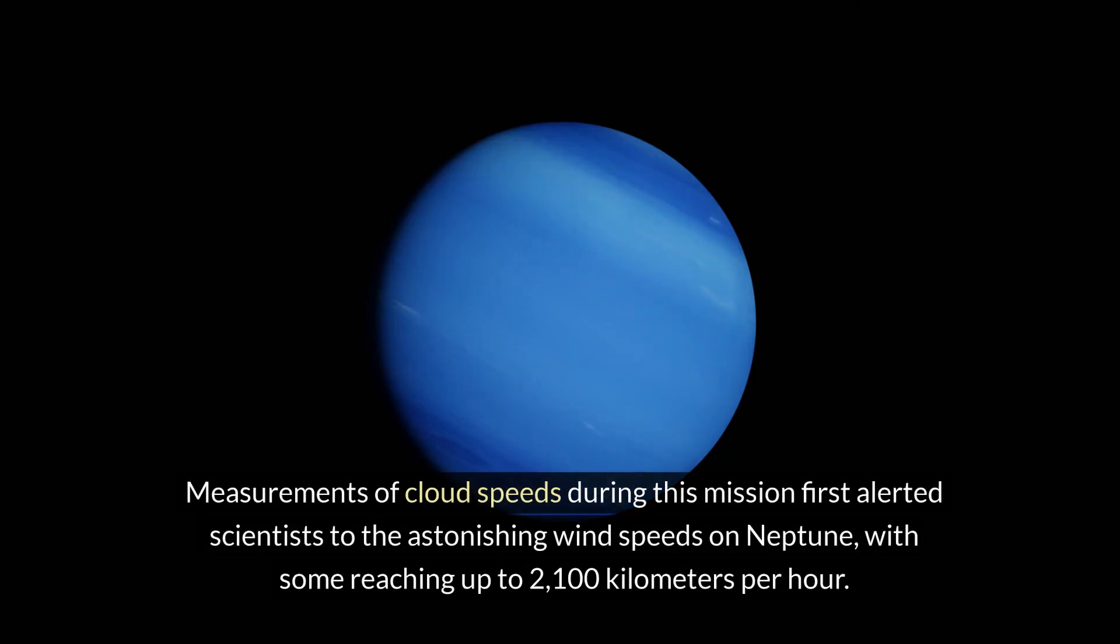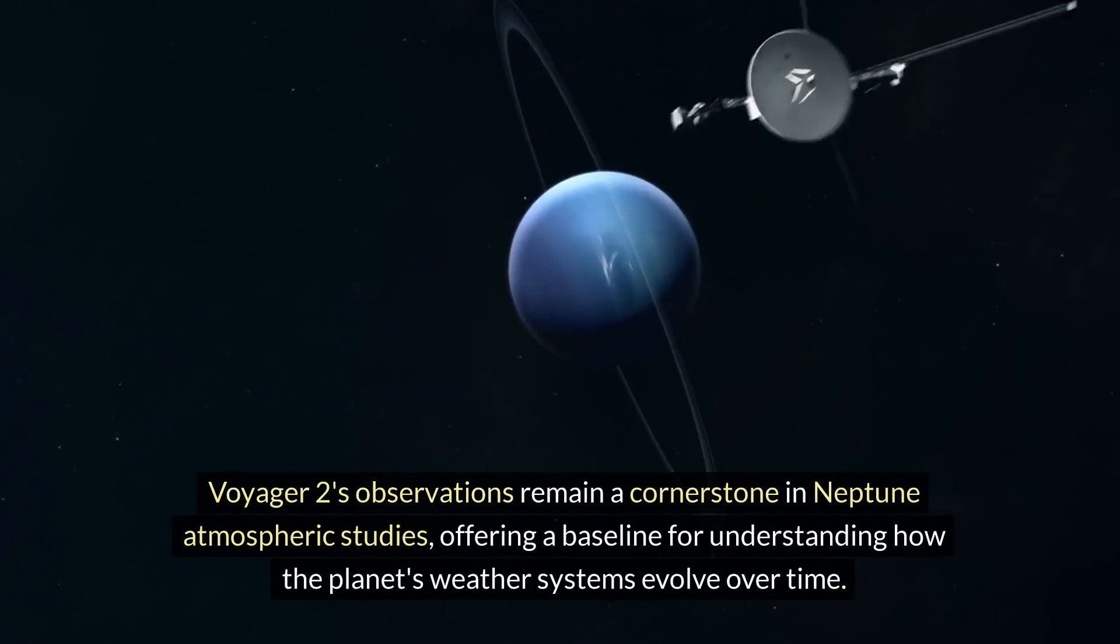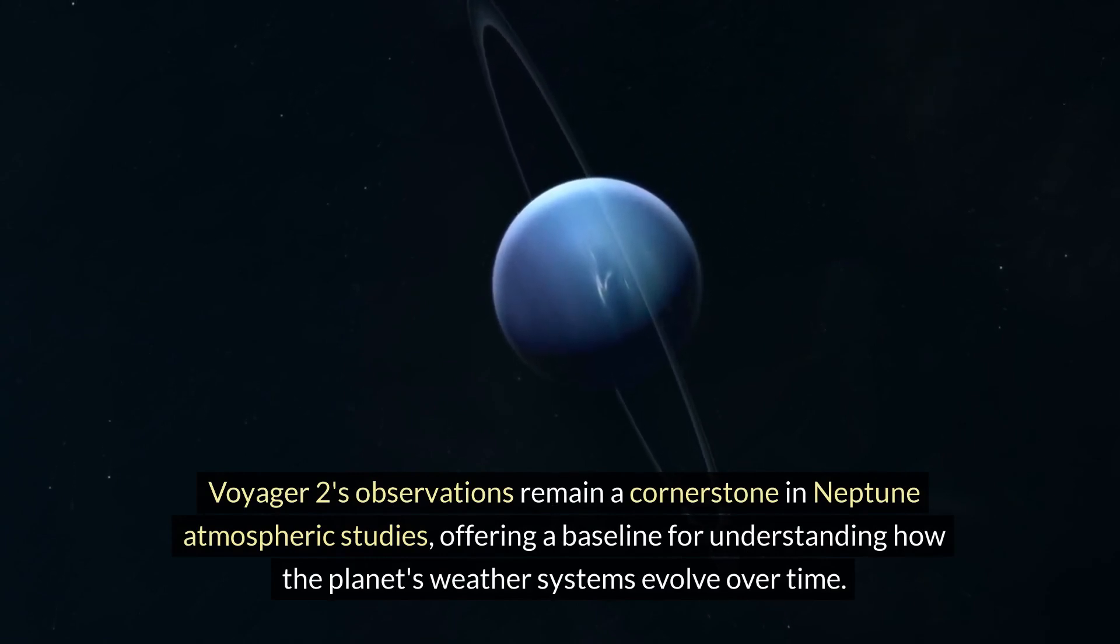Measurements of cloud speeds during this mission first alerted scientists to the astonishing wind speeds on Neptune, with some reaching up to 2,100 km per hour. Voyager 2's observations remain a cornerstone in Neptune atmospheric studies, offering a baseline for understanding how the planet's weather systems evolve over time.